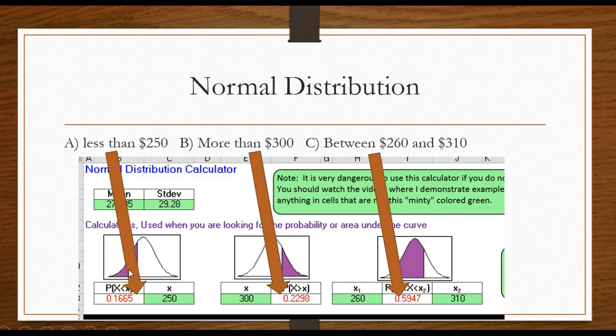Never touch the cells that are not green, so the probability would be 0.1665 and you see the purple jello here is to the left, so I'm finding the probability that it's less than that value. On this middle one the purple jello is to the right.